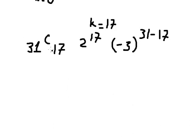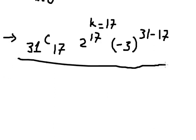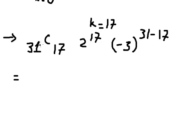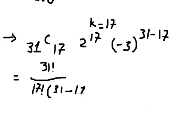After we calculate this, we get the final answer. This is 31 factorial over 17 factorial times 31 minus 17 factorial, multiplied by 2 to the 17, times negative 3 to the power of 31 minus 17.